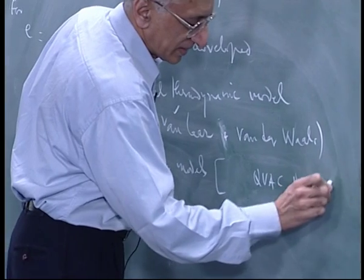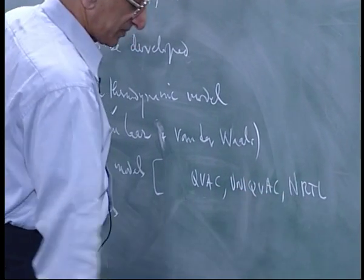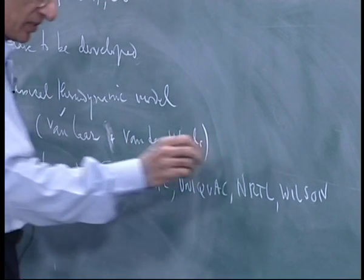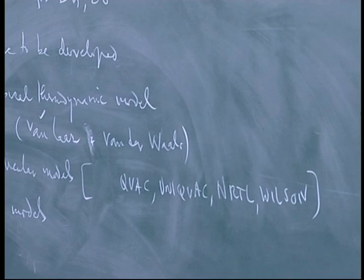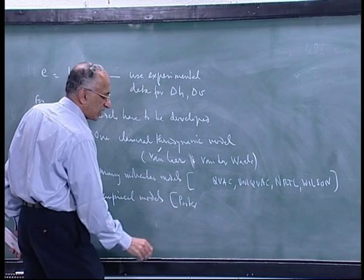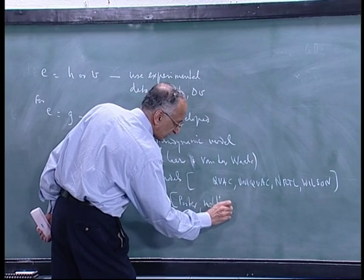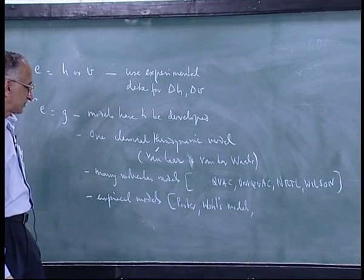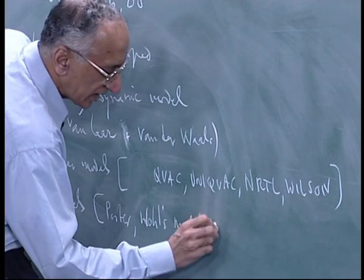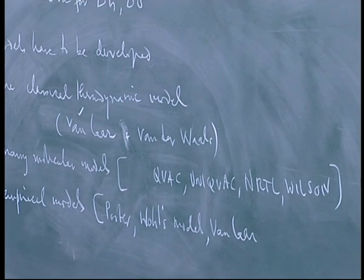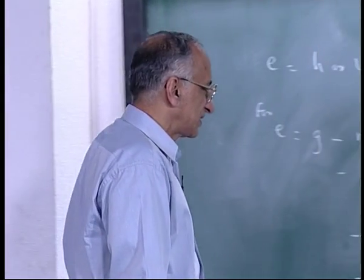The molecular models you need to know are: Uniquac, NRTL, and Wilson. These are the tested ones. Empirical models start from what is called Porter's model and Ohl's models, with a whole series. Van Laar is also counted as an empirical model; it had only one parameter, but later people used the equations without realizing that and made it a two-parameter model, which correlates data so successfully that it is fully established.